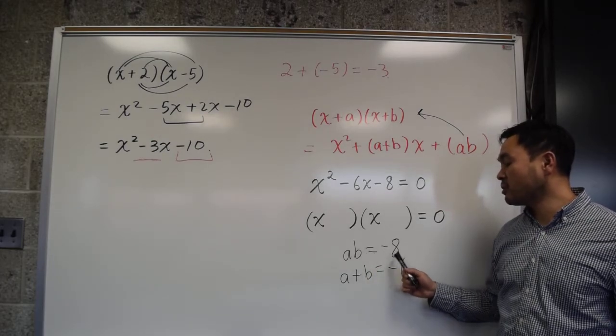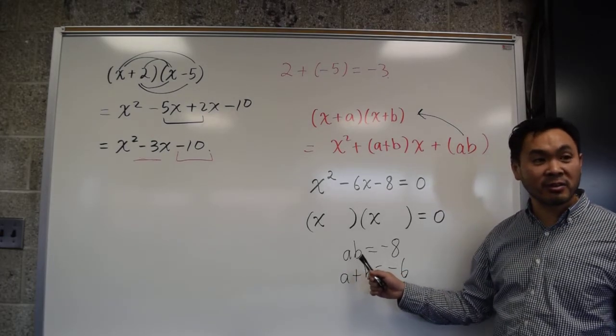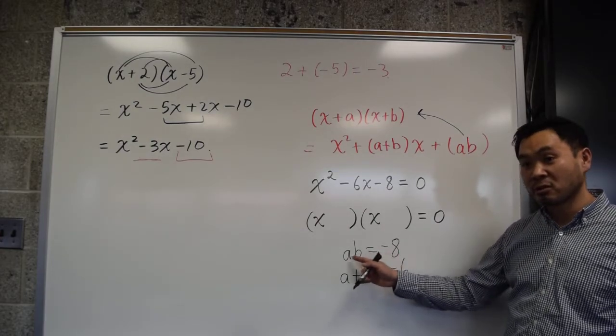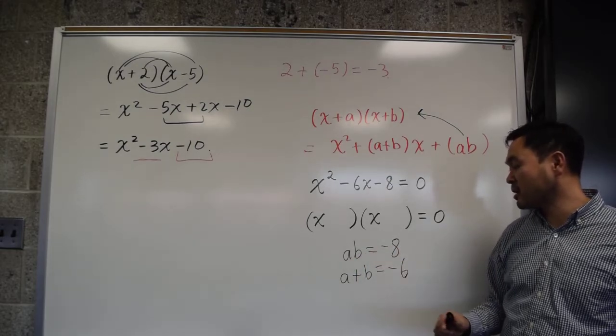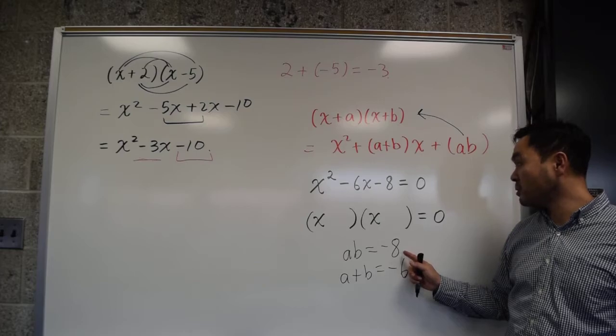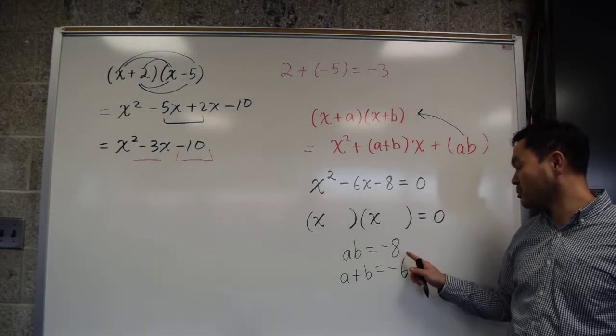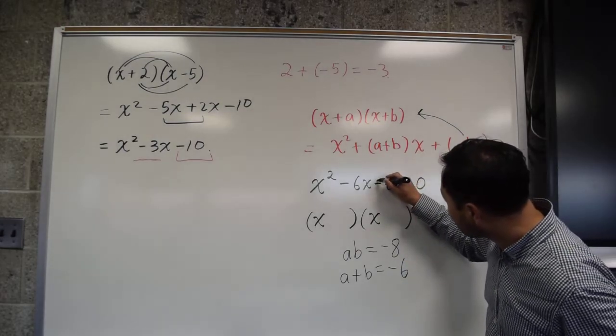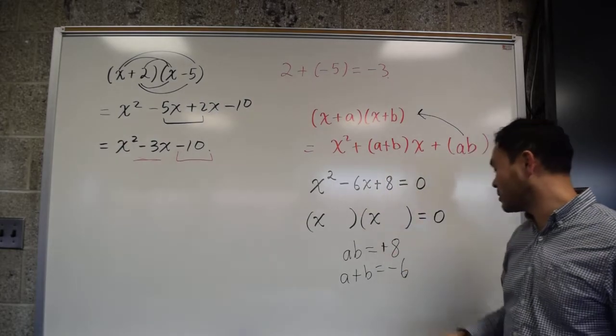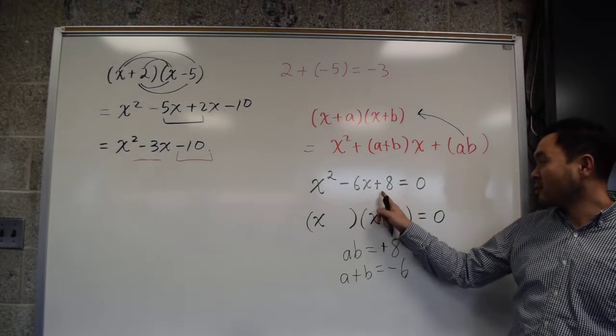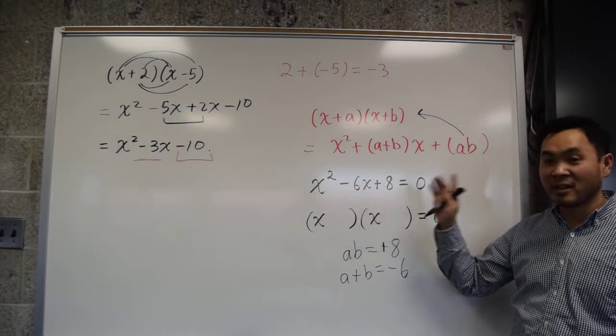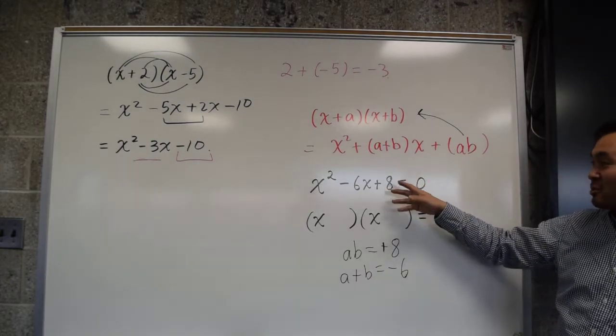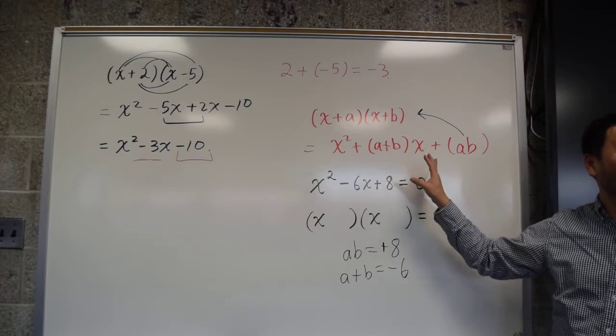Now, to get a negative number, that means one is positive and the other is negative. It can't be both negative or both positive, then the resulting product will be positive, right? So, one is positive, one is negative. So, you think about all the possible... Oh, I just realized... Yeah, it works. It works. Oh, yeah. So, it doesn't work. It should be positive.